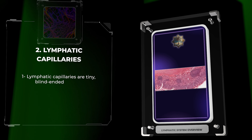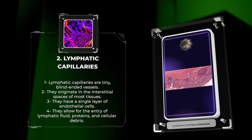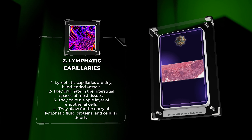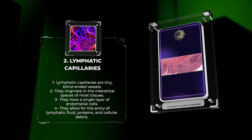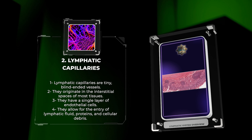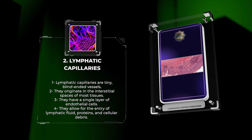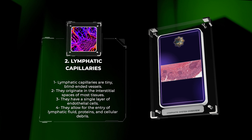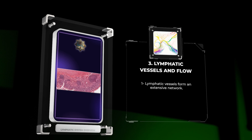Lymphatic capillaries are tiny blind-ended vessels that originate in the interstitial spaces of most tissues. These specialized capillaries are composed of a single layer of endothelial cells, loosely arranged and overlapping, creating flap-like endothelial mini valves. These valves allow the entry of lymphatic fluid, proteins, and cellular debris into the lymphatic capillary but prevent backflow. The lymphatic capillaries are highly permeable, making them efficient in draining excess interstitial fluid and macromolecules.